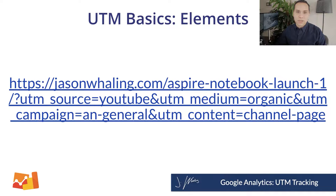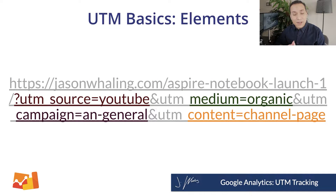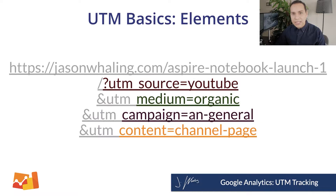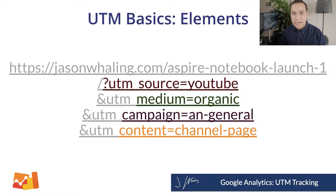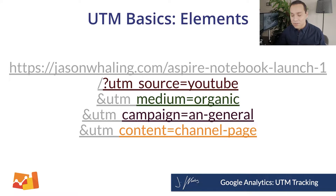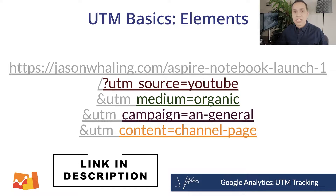The URL goes from looking completely confusing and illegible to — with a little color coding magic — you can start to see specific elements telling Google Analytics detailed information about where someone is coming from, and you get to choose what you tell Analytics. It's very important that once you come up with your URLs, you're sure that's what you want, because nothing we're going to talk about here is retroactive. Use that tool in the description to make sure everything is standardized.